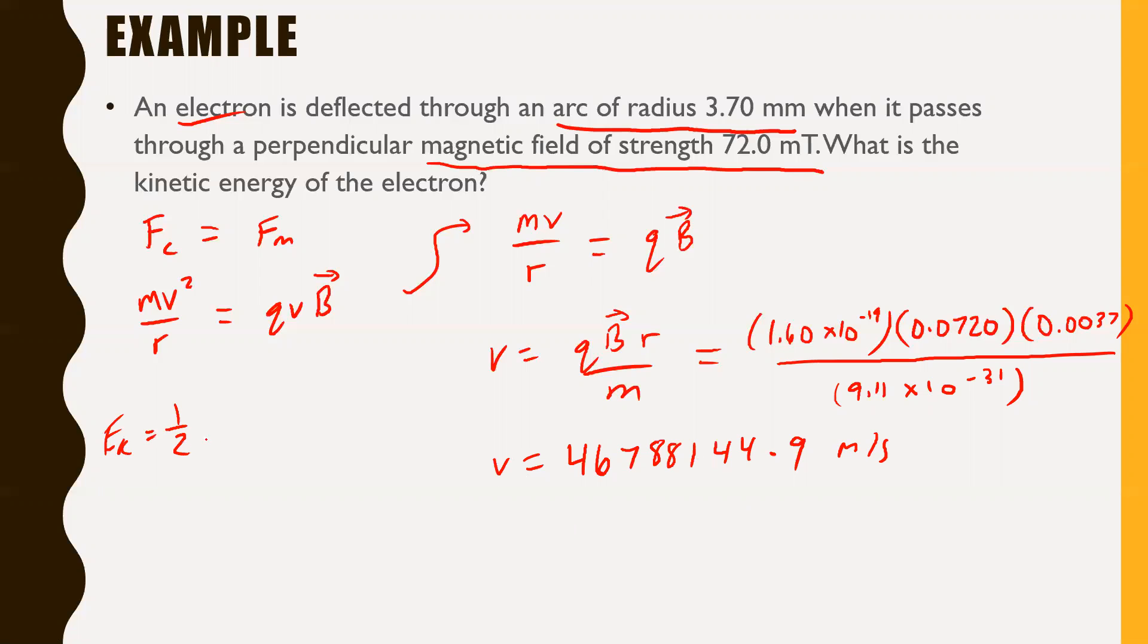We can use this now to find our kinetic energy. Kinetic energy, Ek, is one half mv squared. We know the mass. Again, it's 9.11 times 10 to the negative 31. And we've determined the velocity. So Ek equals one half times 9.11 times 10 to the negative 31 times v, which is 46788144.9 squared. Throw that in your calculator. Round to three sig digs, 1.99 times 10 to the negative 15 joules. So that is how much kinetic energy that electron must have had.